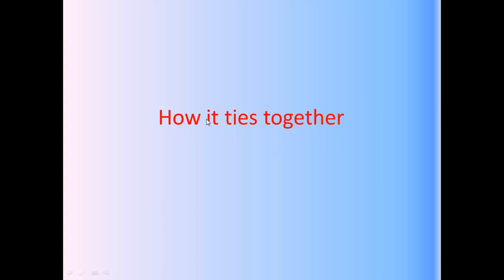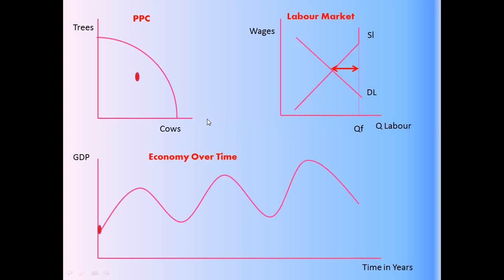So let's have a look at how it all ties together. What we have here is a production possibility curve for an economy similar to New Zealand, but not exactly the same, which produces trees and cows. And currently that point there, the red dot, represents a point of unemployment.